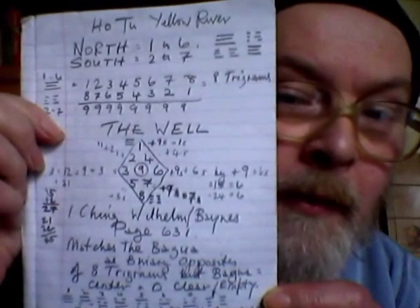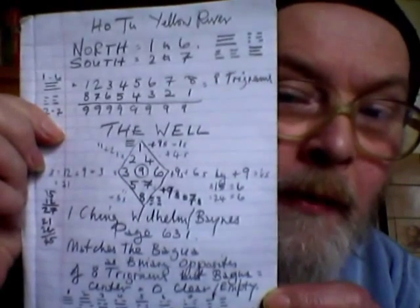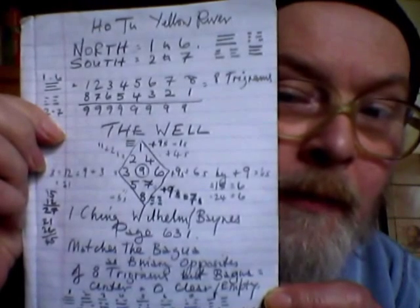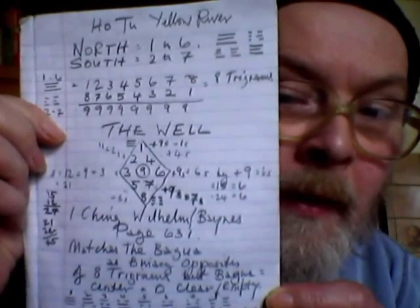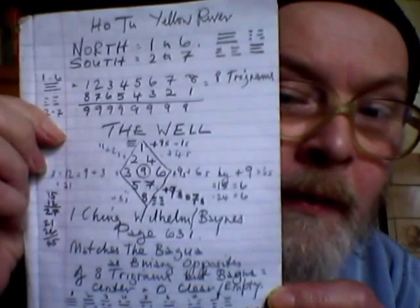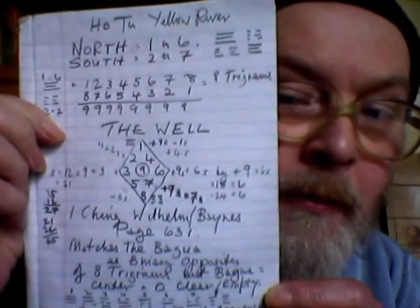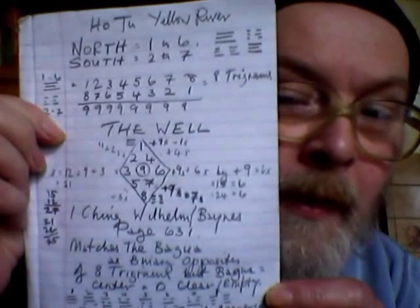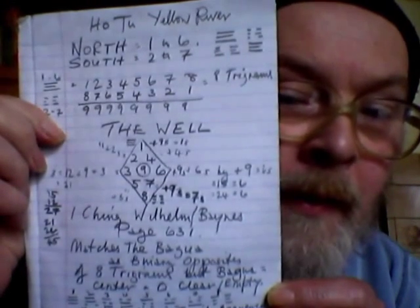Here we're looking firstly at the Ho2 Yellow River map, north and south, 1627. North is led by 5GCAN and ends with CUN. South starts with 5GCAN value of 2, and ends with CUN value of 7.